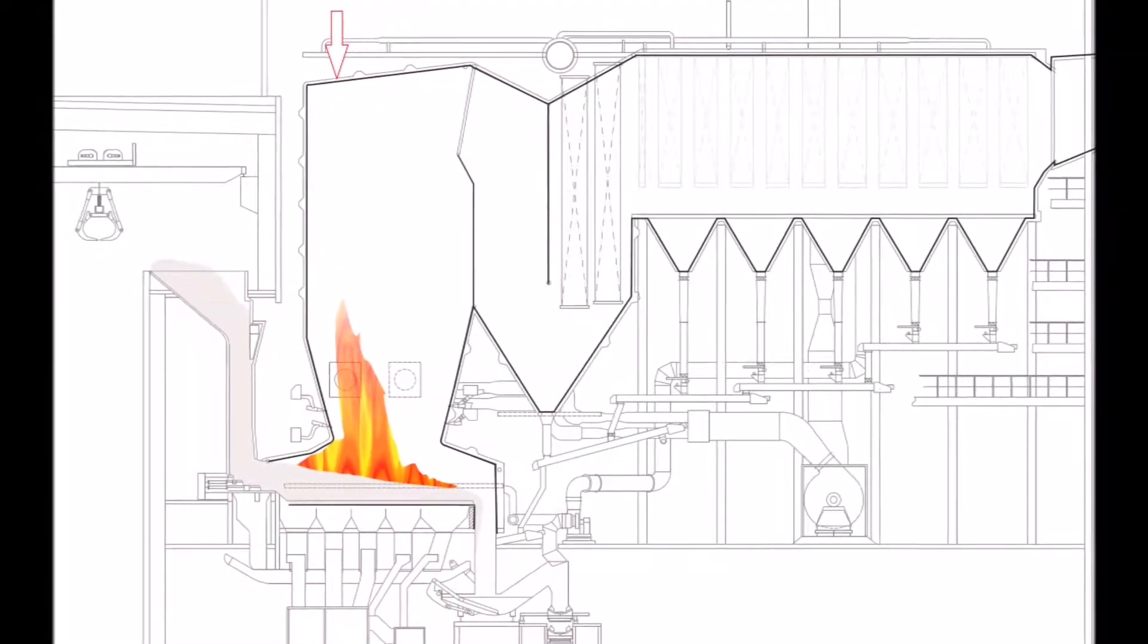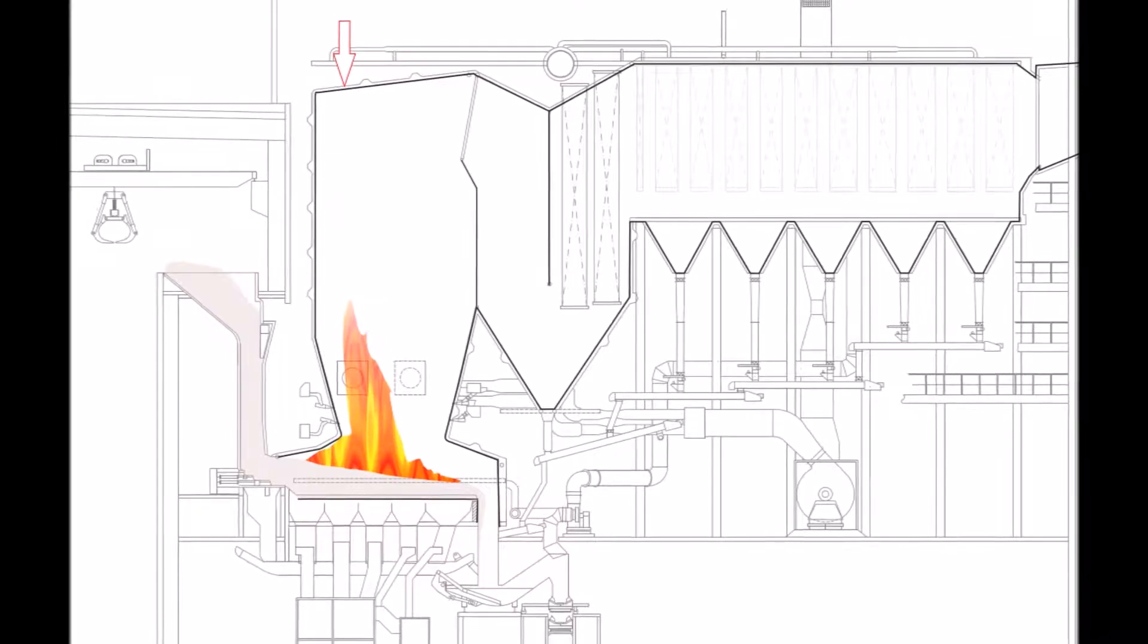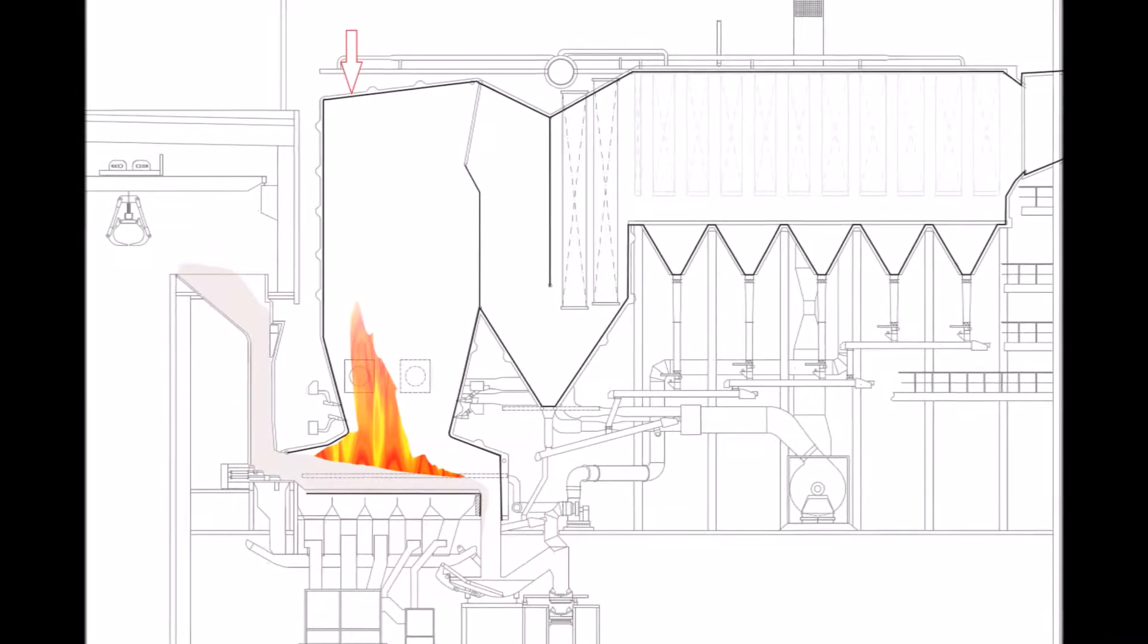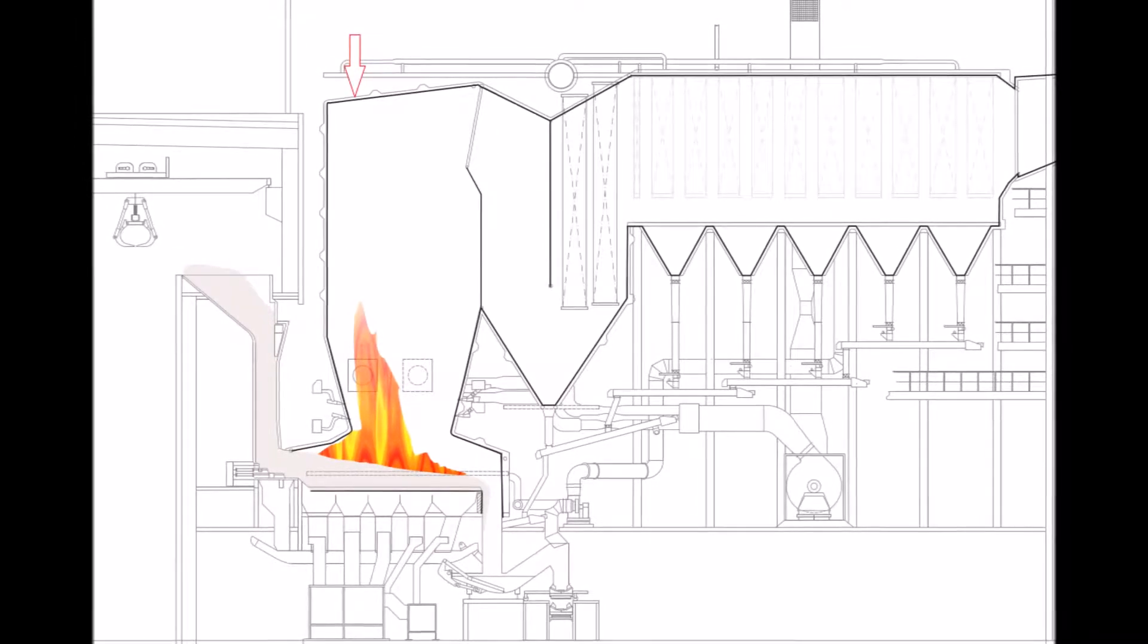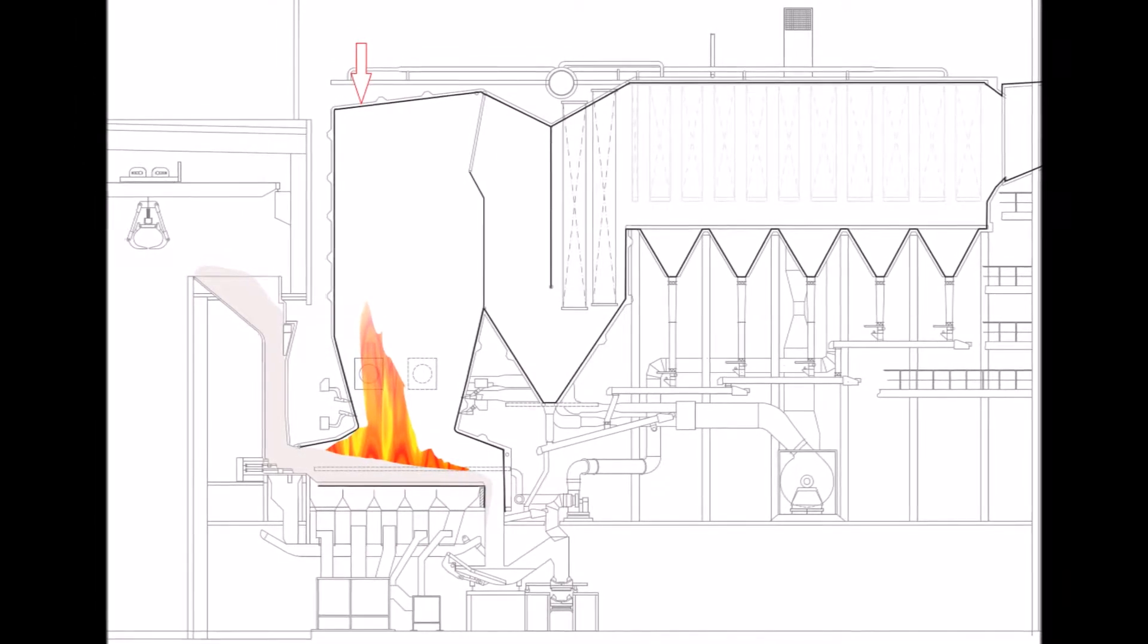We see a scheme of the boiler, and the red arrow indicates the point where the camera was lowered inside the first radiation pass. We did it on the left-hand side wall of the boiler.